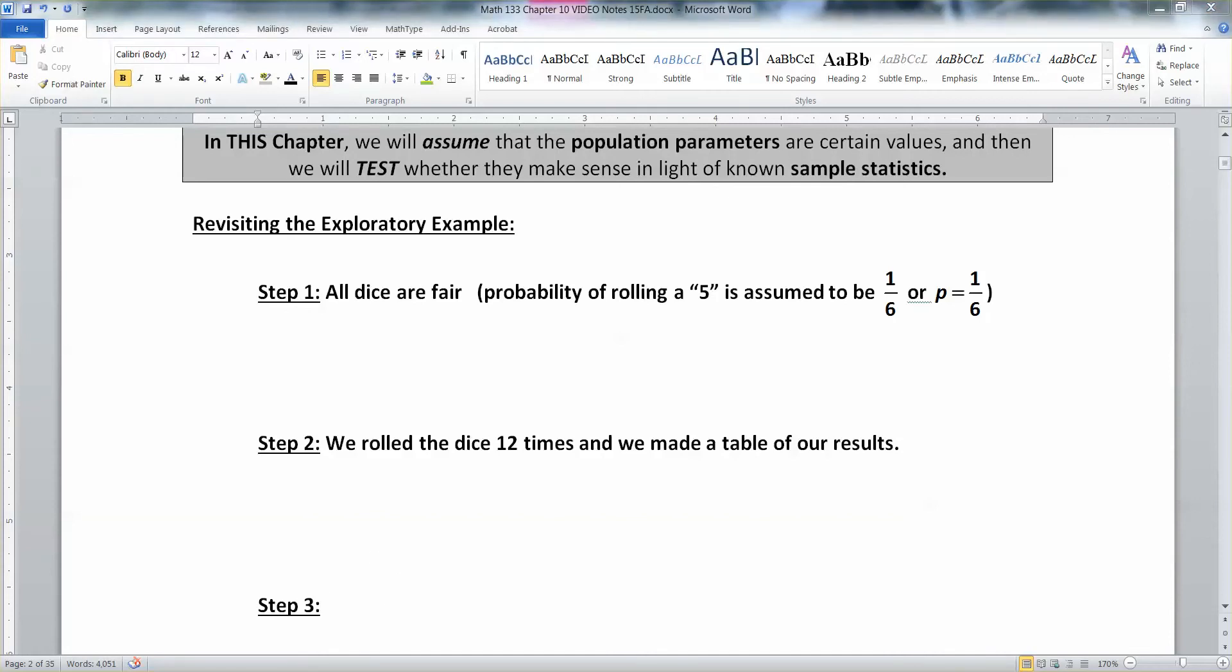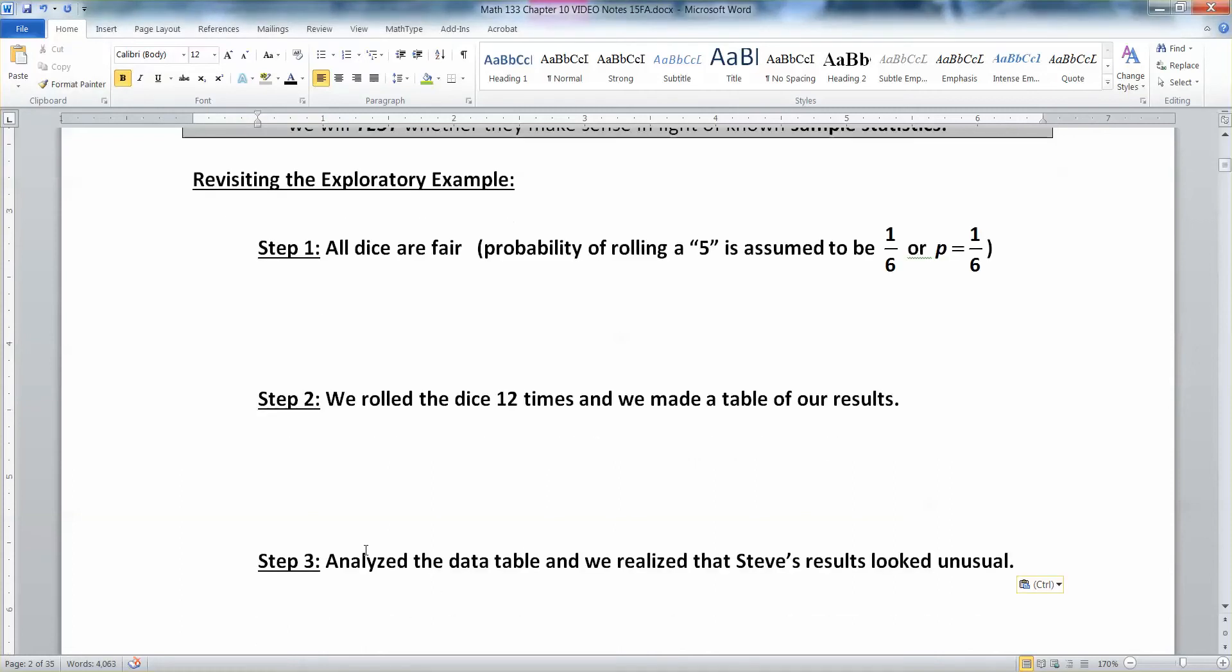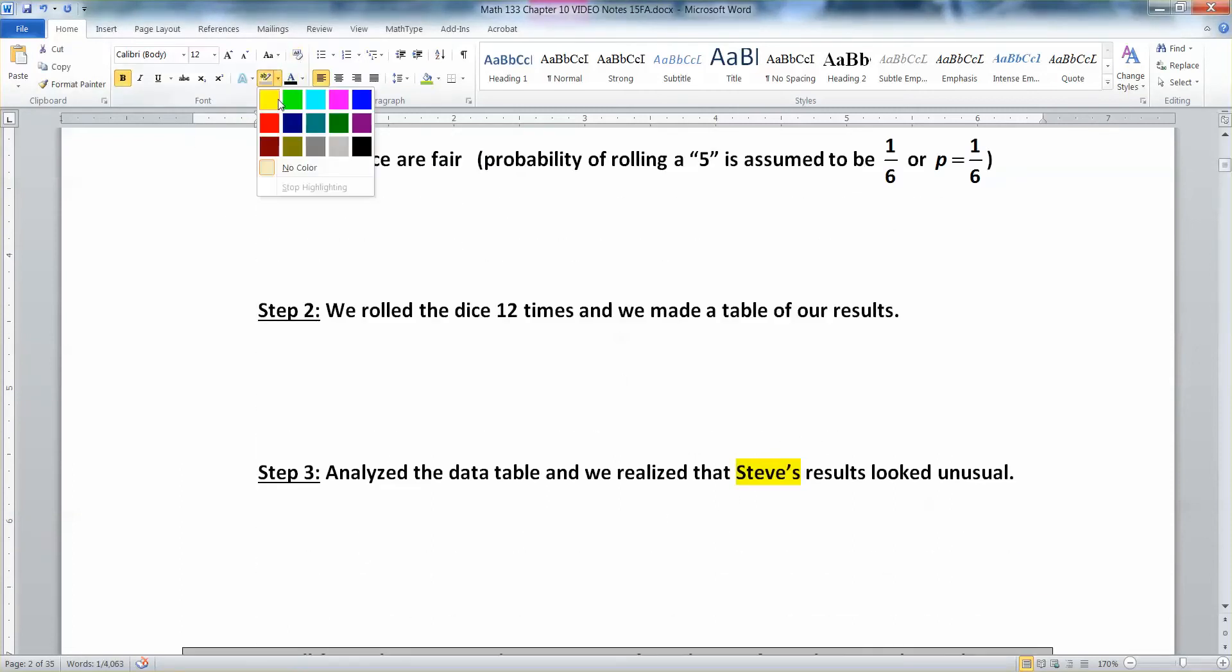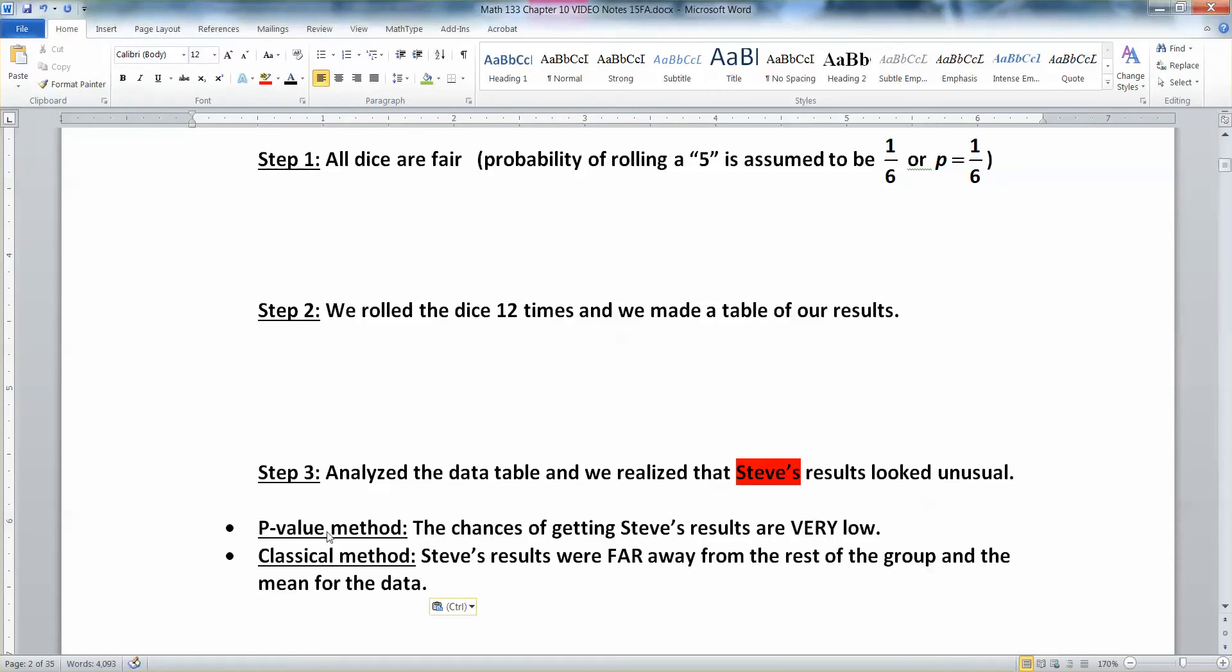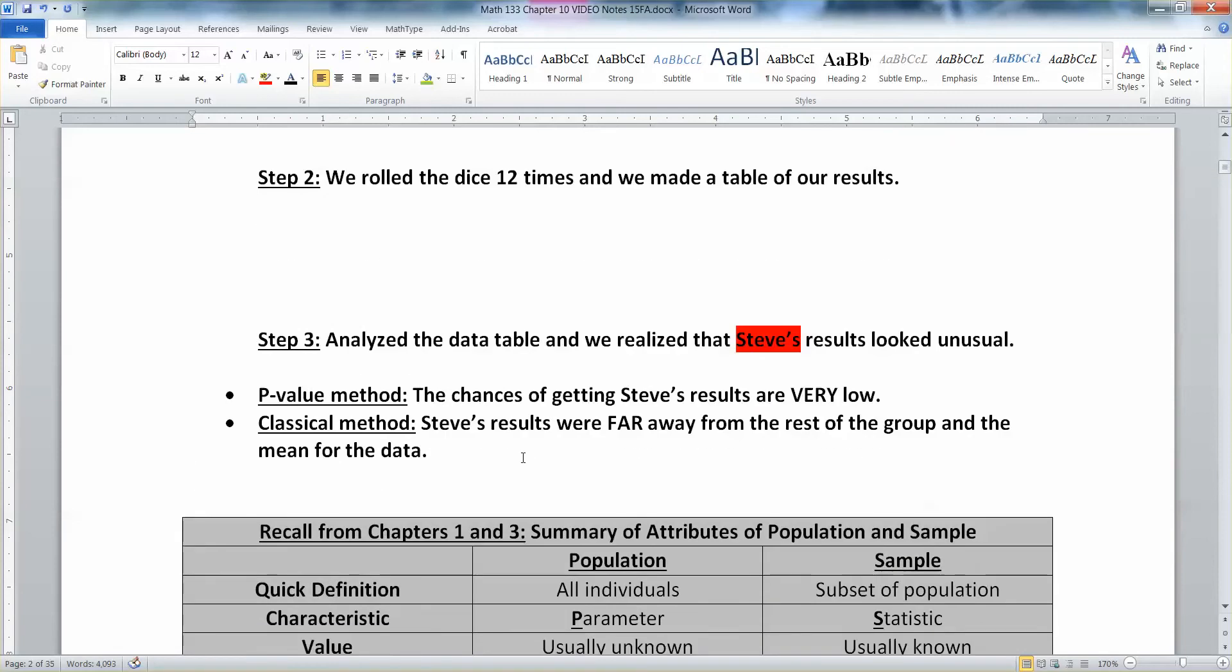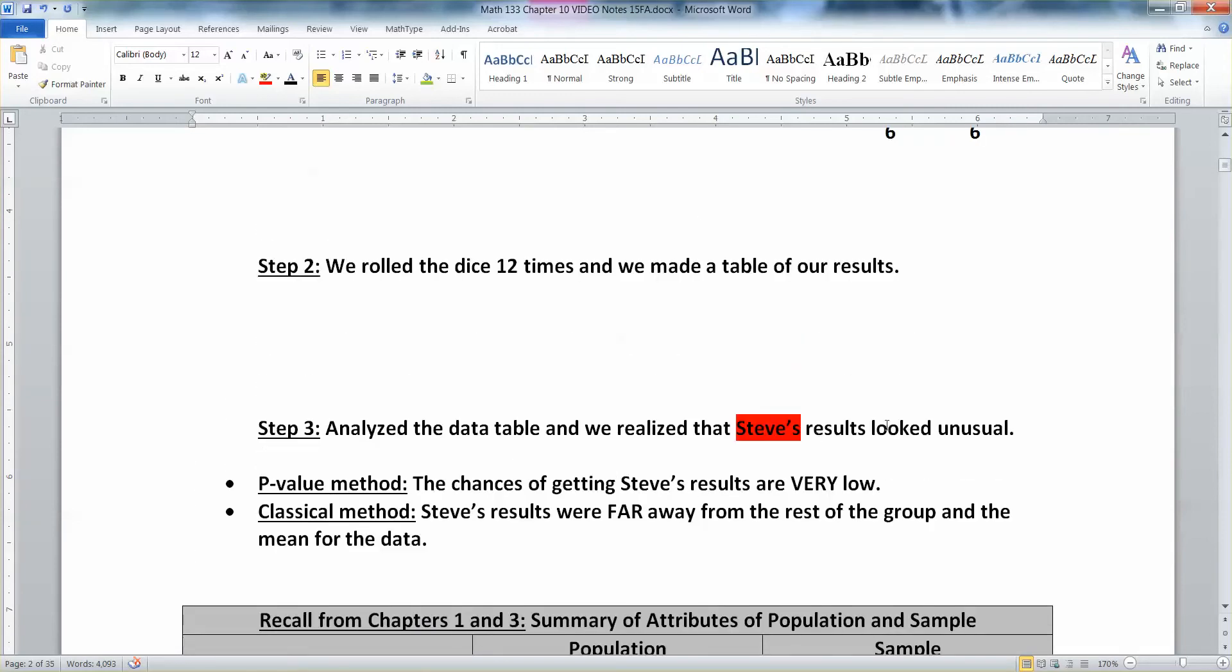But then we analyzed those results and we saw something was up with that one student. Well, he wasn't a student. My husband, Steve, right? Something was going on with Steve's results. Let's give him a red, right? Because he was the red one in the table. And there's two ways to think about it. You can think of it as the p-value method. The chances of getting his results are really low, or he was far away from the rest of the group. That's the classical method. And either way, you know something was up with his die because his results were so unusual.